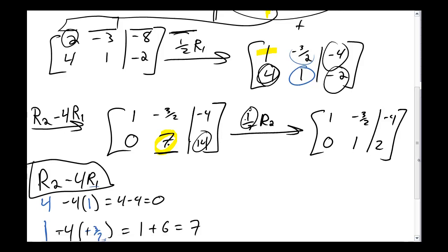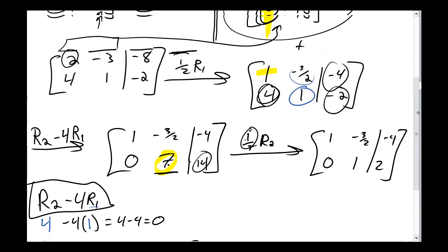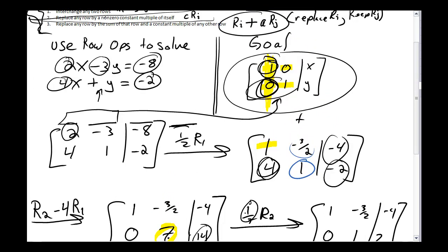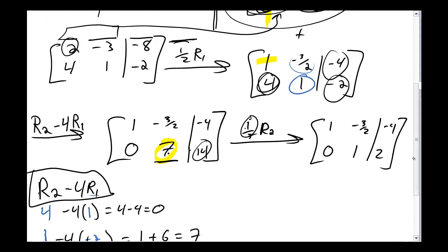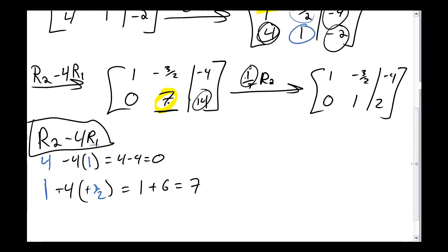At this point, my bottom row, row 2, is perfectly fine. It's exactly in the format I want it to be. It's got a 0 1 here, and on the other side, the augmented part, it's got some constant number. In this case, that number is 2. But I'm not quite done yet. I need to do one last thing with my rows. I need to turn this guy here into a 0.